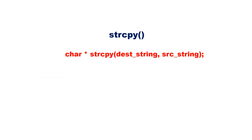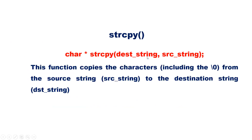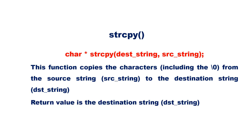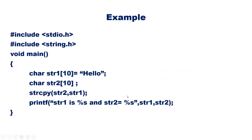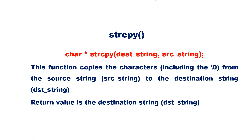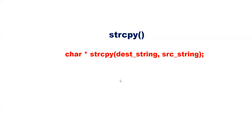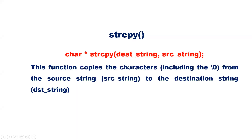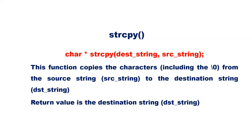The next one is strcpy. It copies the source string to the destination string. The second parameter is the source string and the first parameter is the destination string. The function copies the characters including '\0' from the source string to the destination string, and returns the value in the destination string.